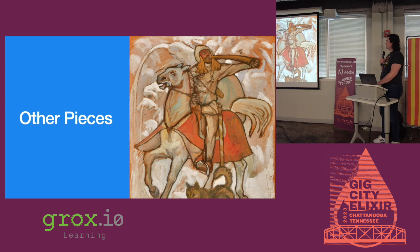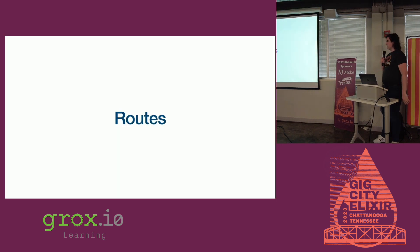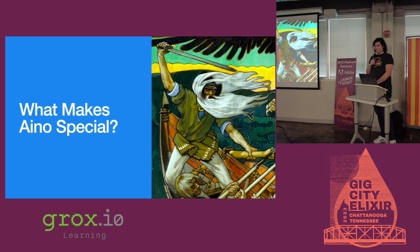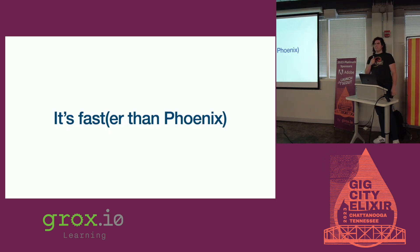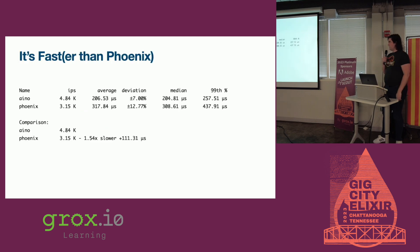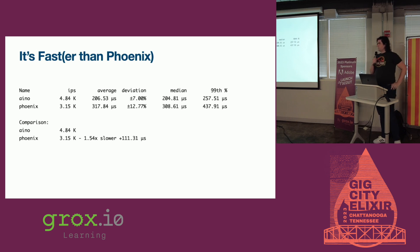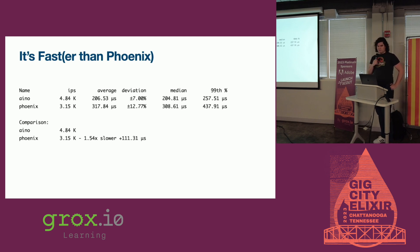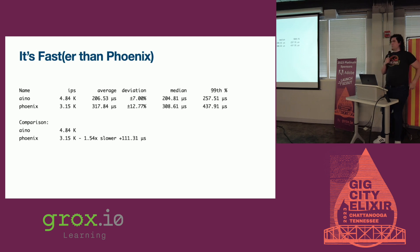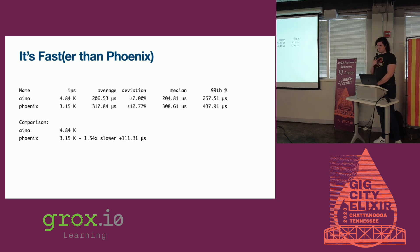There are a few other pieces: it's got views, nothing special; it's got routes, nothing special. So what does make Inu special? It's faster than Phoenix — about one and a half times faster, which is pretty cool. This is a Phoenix new with built-in prod mix env with just a simple route that returns hello world, and then the same thing for Inu. I think this was on a 12-core VM with 32 gigs of RAM.